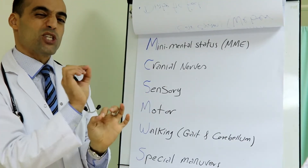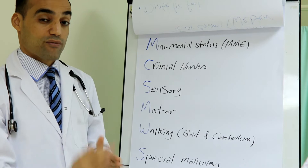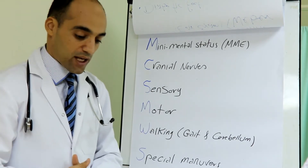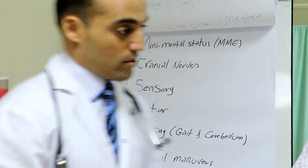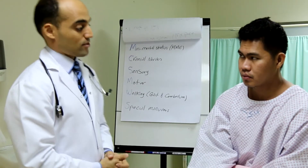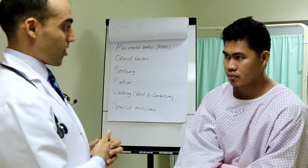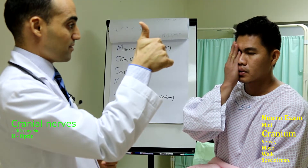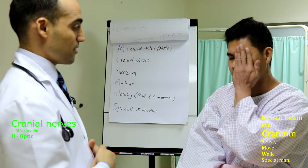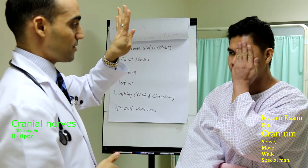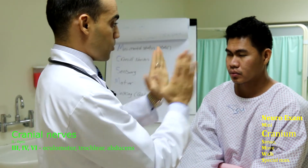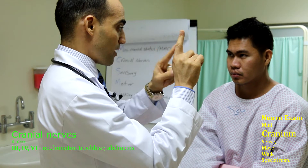I'm now going to demonstrate the basics of the neurological examination. Mr. Sammy, I'm going to do an examination of your nerves. Could you cover your right eye — count my fingers — and now cover the other eye. Thank you. Now don't move your head and follow only my finger with your eyes.